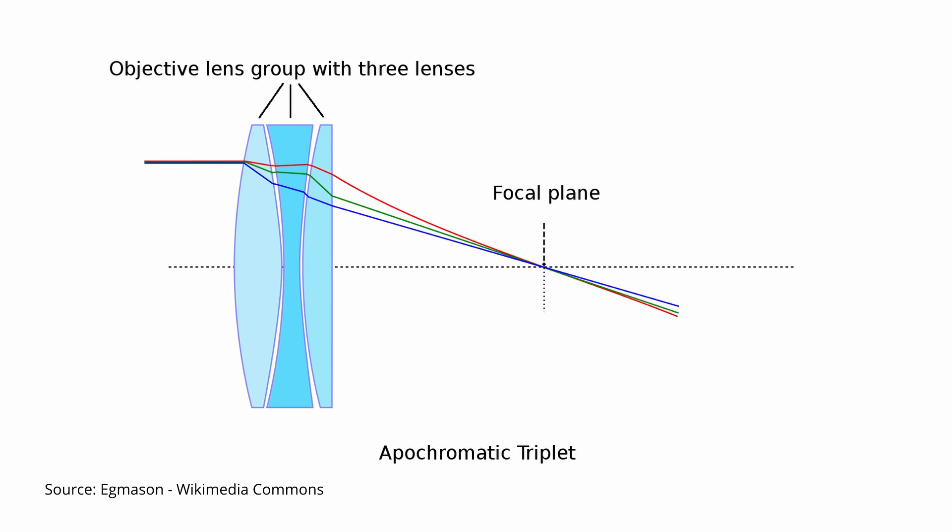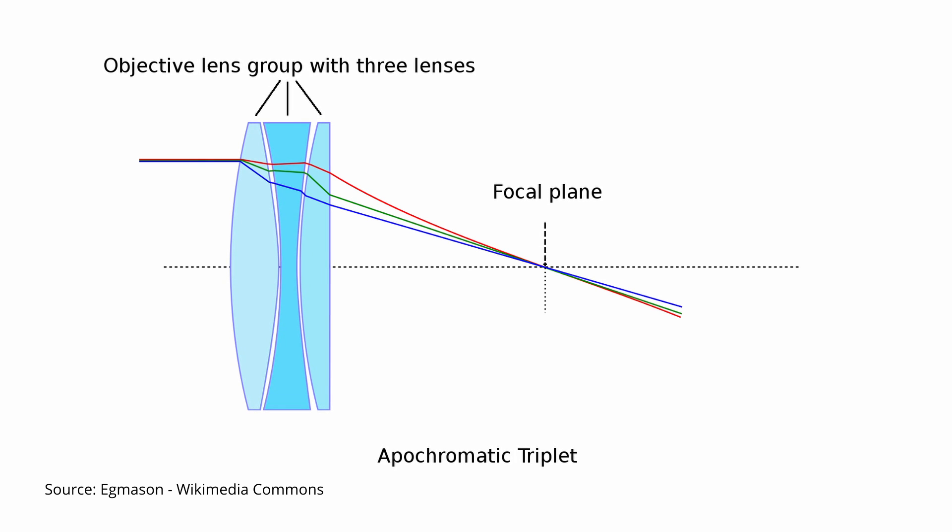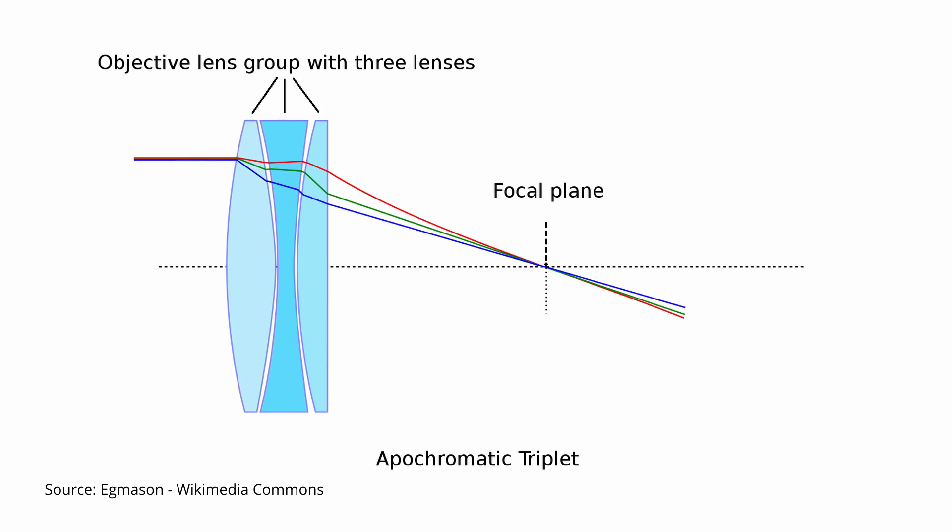To improve the quality of the views even further, manufacturers started adding additional lens elements to the objective, thus creating the apochromatic design. By employing a third element design, where each element features different optical properties, a triplet refractor is able to correct incoming light even further, allowing different wavelengths to be focused precisely in the same spot, leading to color aberration-free views.